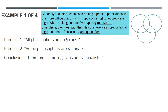We will work on four examples. Generally speaking, when constructing a proof in predicate logic, the more difficult part is with propositional logic, not predicate logic. When we make our proof in predicate logic, we typically — not always, but typically — remove the quantifiers first (step one). Then we deal with the rules of inference in propositional logic (step two). And then, if necessary, we add quantifiers (step three). We need to keep this in mind when we do predicate logic.